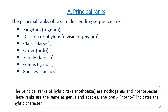The principal ranks of hybrid taxa are Notogenus and Notospecies. These ranks are the same as genus and species, and the prefix 'Noto' indicates the hybrid character.